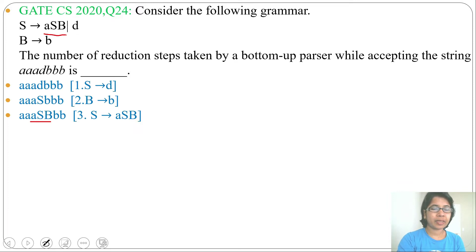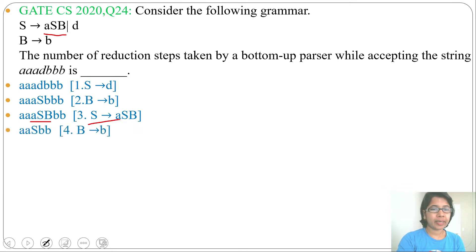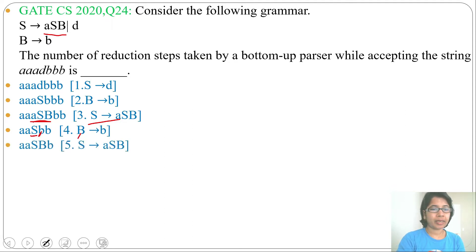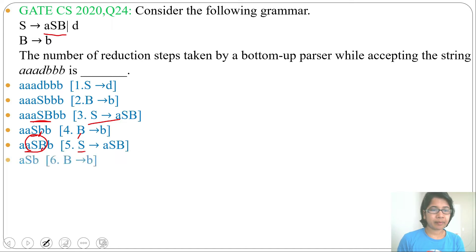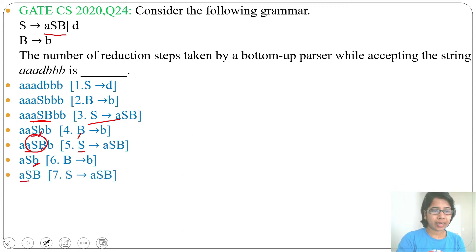This ASB can be reduced to S — this is reduction number 3. In place of ASB, I am writing S. Next, this B can be reduced to B. In place of terminal B, I am writing B. Then ASB can be reduced to S — in place of ASB, I am writing S. Then again this B can be reduced to variable B. Then ASB can be reduced to S.